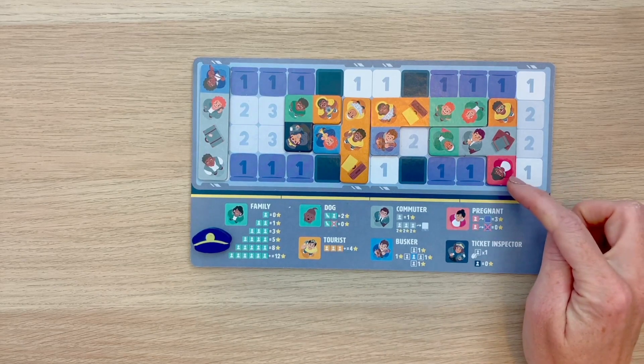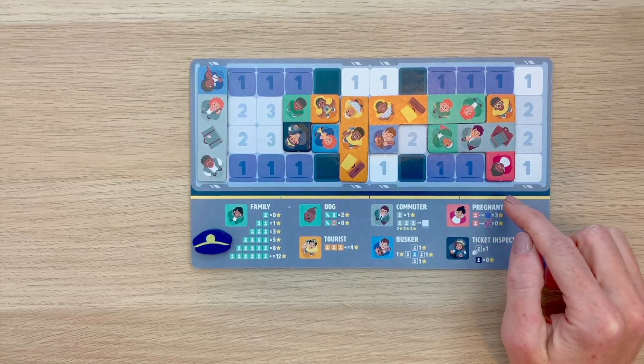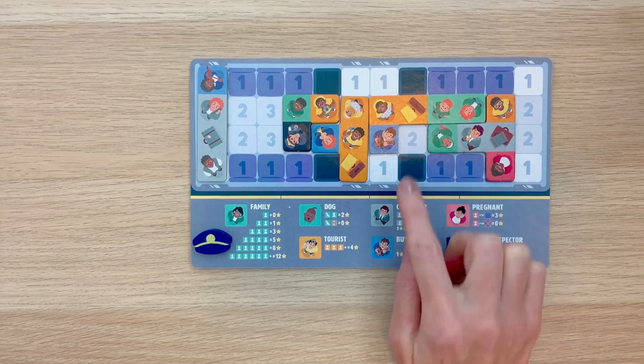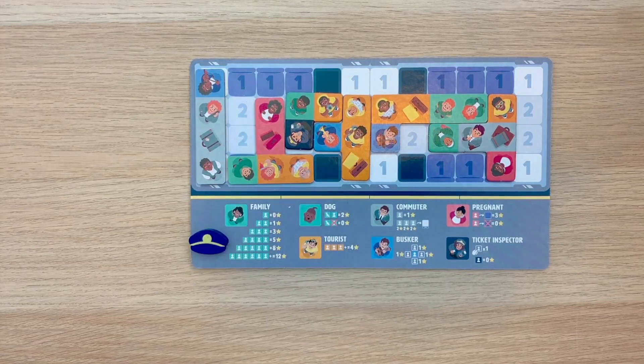Now let's take a look at pregnant women. Pregnant women should be given a seat and they score three points if they're in a seat. And remember, these are the purple spaces on our subway carriage. If you're not able to seat your pregnant women, then they're going to be worth zero.